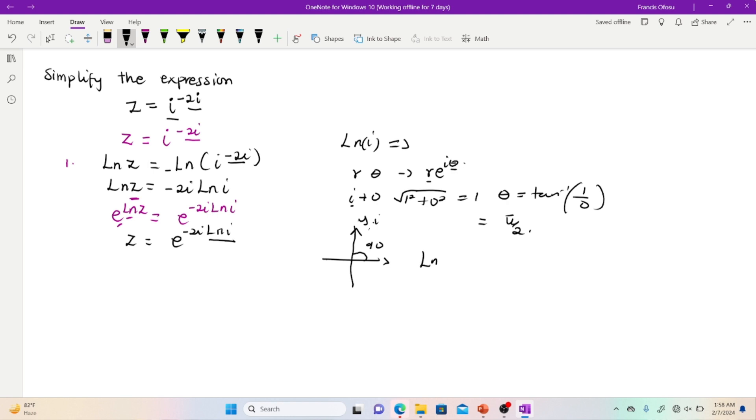So now, our ln i can be expressed as our r is 1 multiplying e to the power i. But our theta is now π on 2.